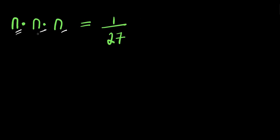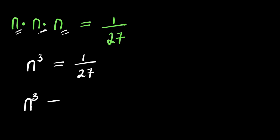So n times n is n squared, times n, this is n cubed. And this equals 1 over 27. From here we can have n cubed equals 1 cubed divided by 3 cubed.